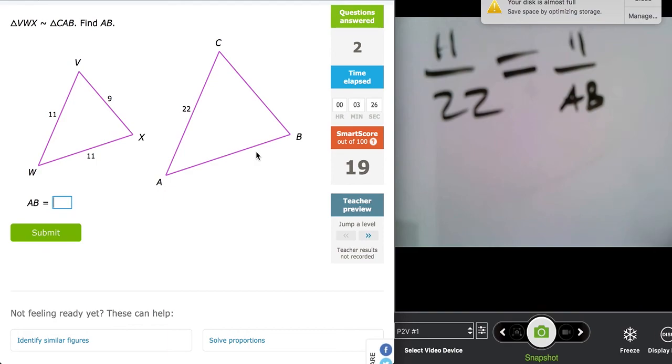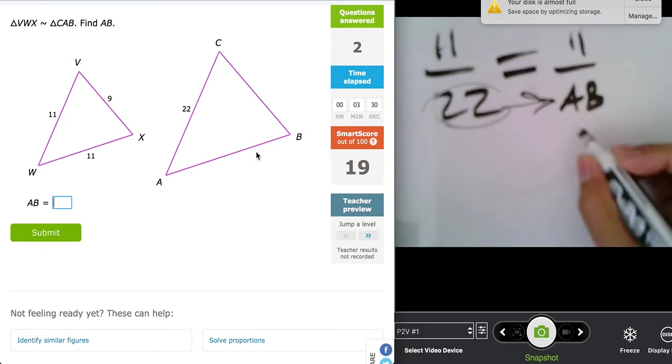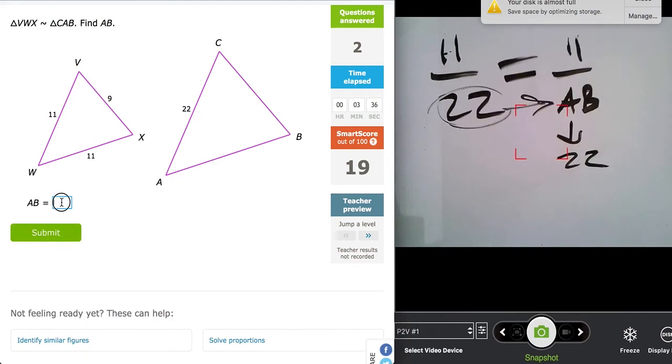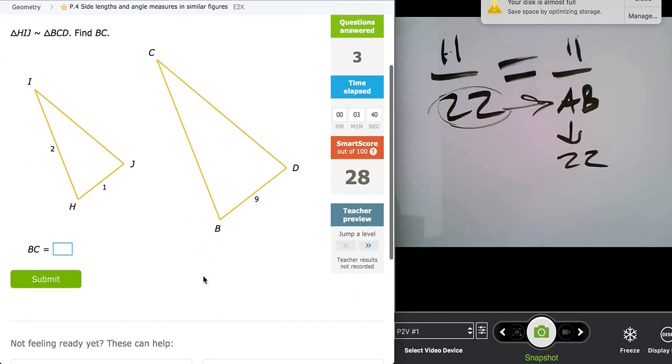So because that's 11, that's 11, and this is 22, this must also be 22. So there's really not much math to do in this case.